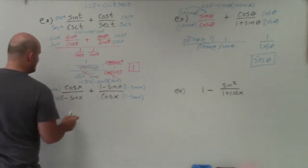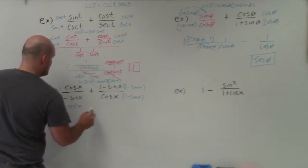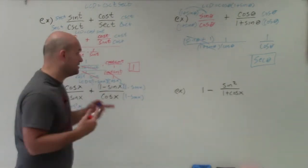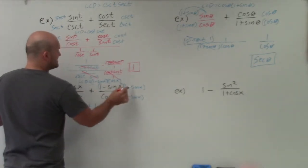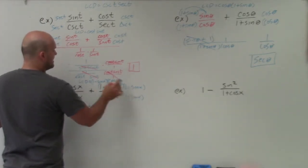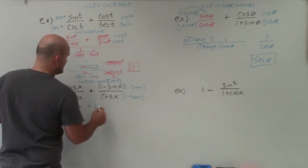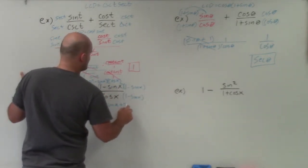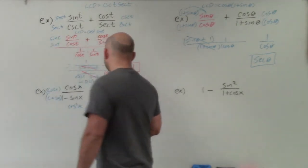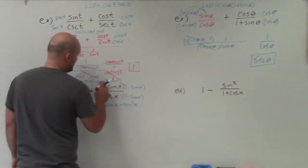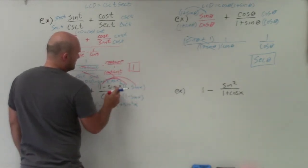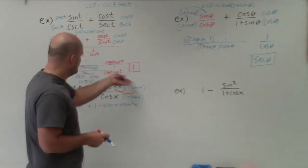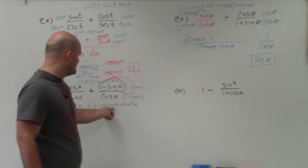Multiplying out: cosine of x times cosine of x gives cosine squared of x. For the second term, I'll use FOIL: 1 times 1 is 1, 1 times negative sine of x and negative sine of x times 1 combine to give negative 2 sine of x, and negative sine of x times negative sine of x gives positive sine squared of x. Applying FOIL, the middle two terms combine to give negative 2 sine of x.